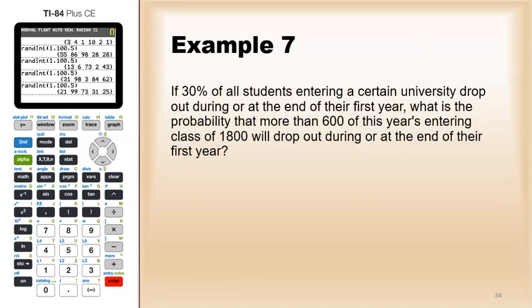Example 7. If 30 percent of all students entering a certain university drop out during or at the end of their first year, what is the probability that more than 600 entering this class of 1800 will drop out before their first year?